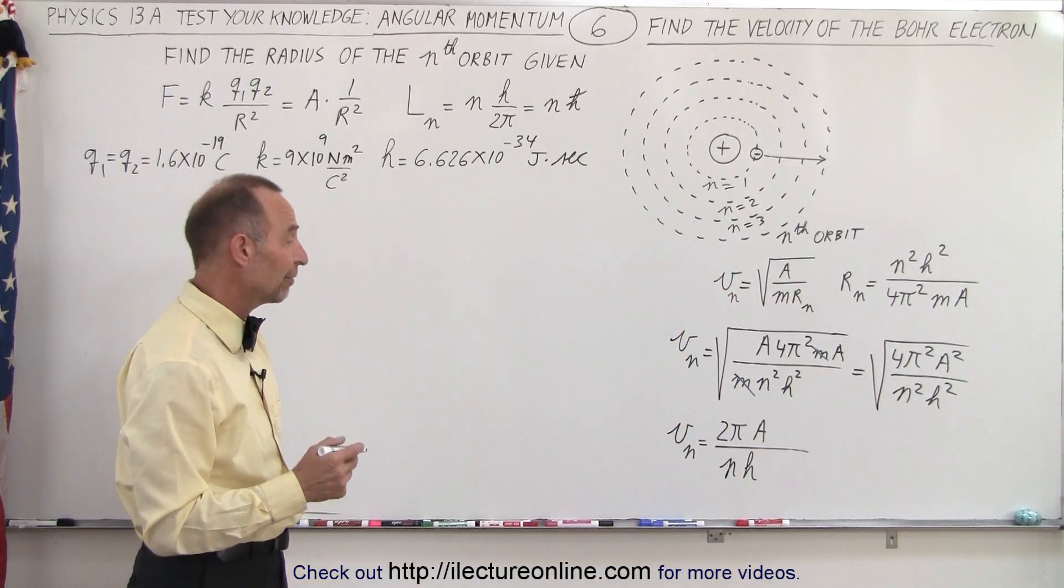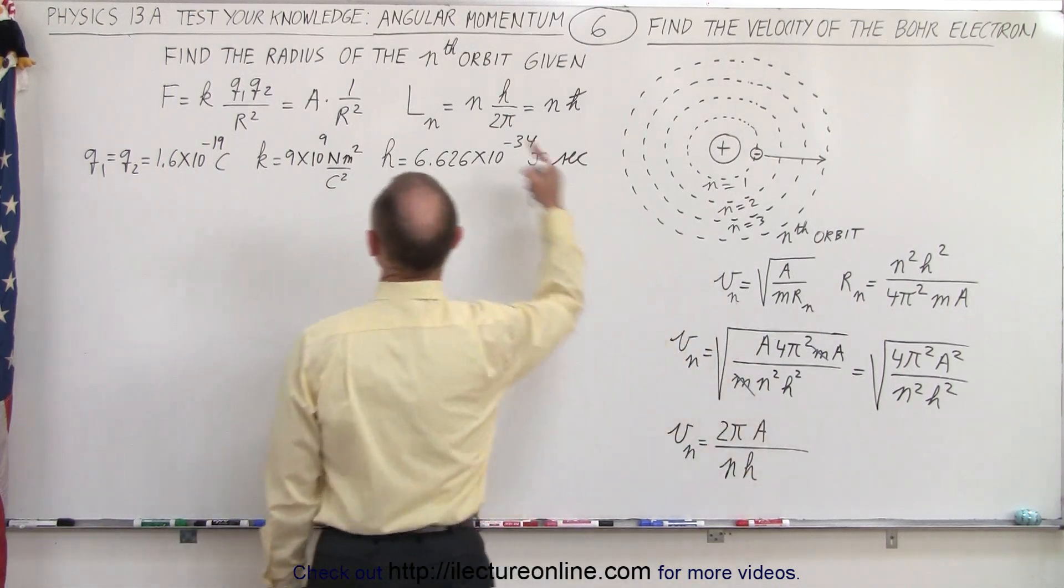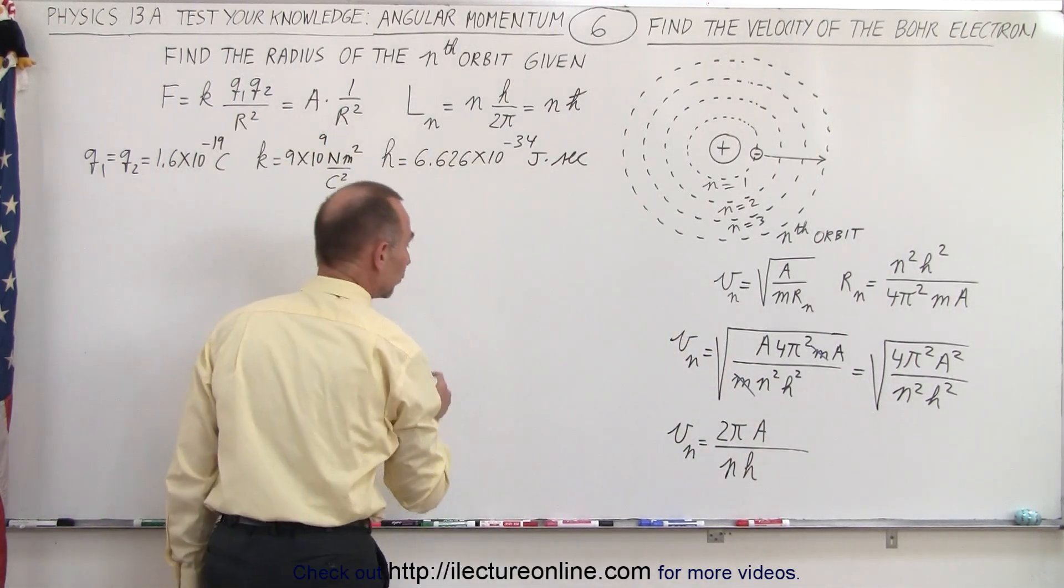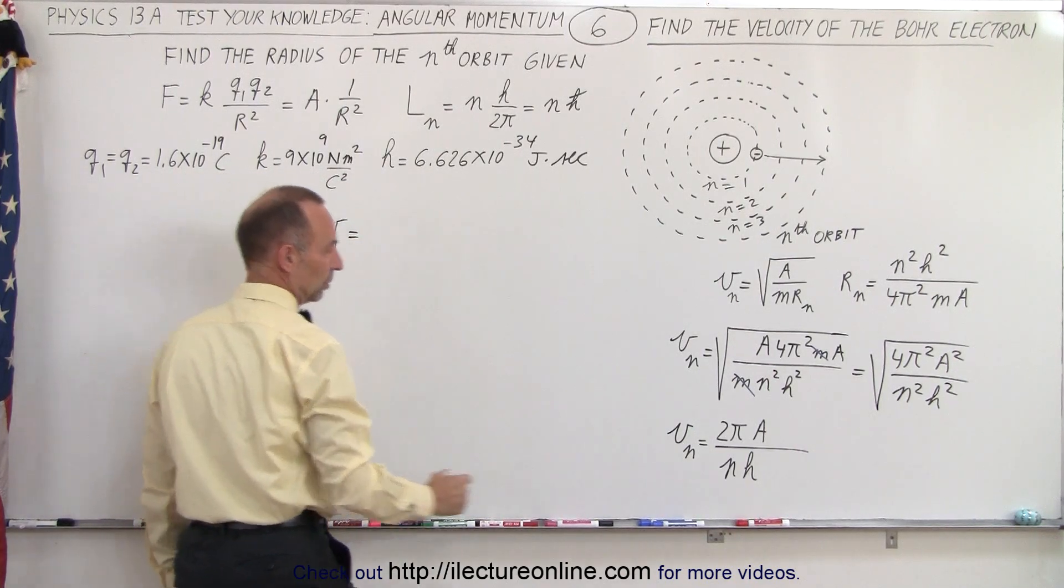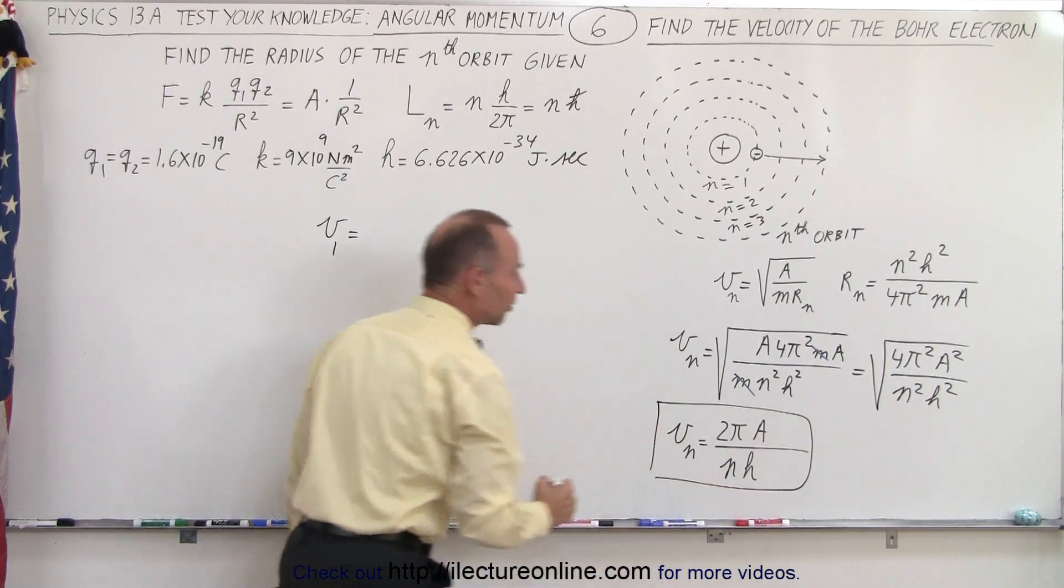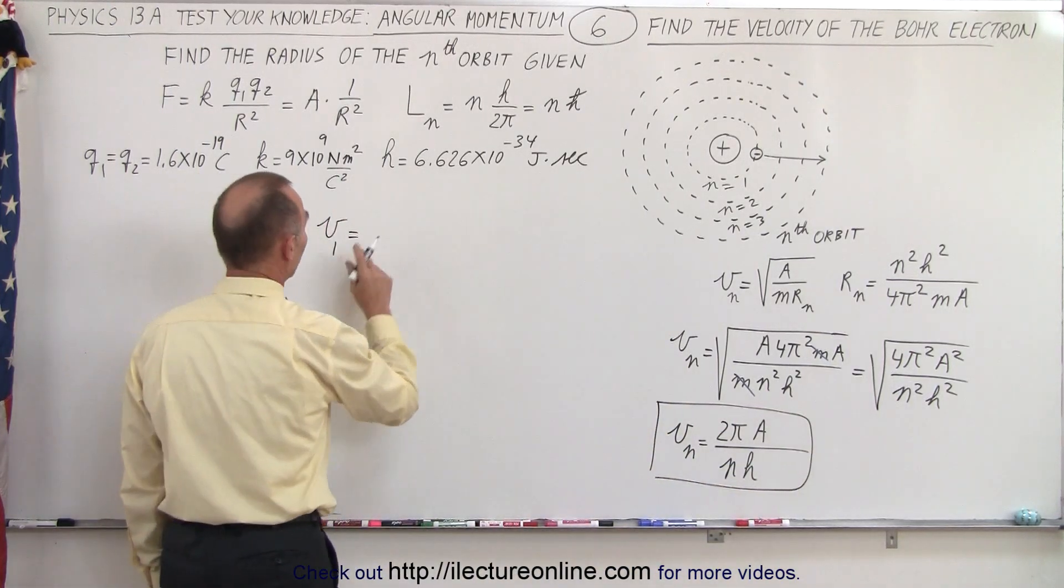So now let's say we want to find the velocity when n equals 1, and we're going to plug in for a what a is equal to, which is k q1 q2. So velocity in the first orbit is equal to, well, first of all, let's go ahead and box that, because that's the velocity for any of the orbits.